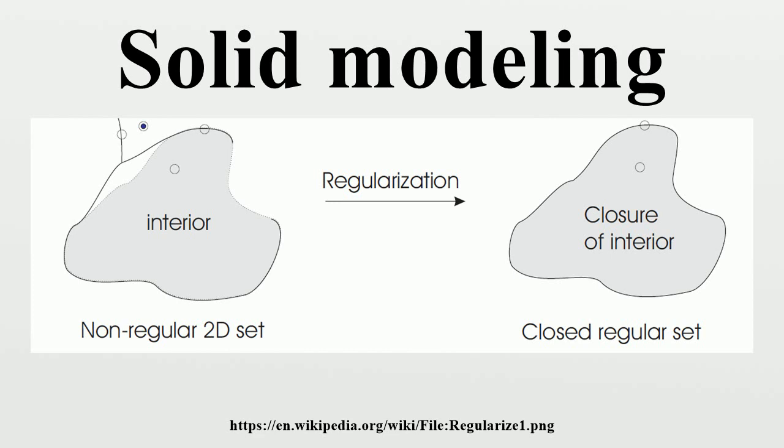Cell decomposition: This scheme follows from the combinatoric descriptions of solids. A solid can be represented by its decomposition into several cells. Spatial occupancy enumeration schemes are a particular case of cell decompositions where all the cells are cubical and lie in a regular grid. Cell decompositions provide convenient ways for computing certain topological properties of solids such as connectedness and genus. Cell decompositions in the form of triangulations are the representations used in 3D finite elements for the numerical solution of partial differential equations. Other cell decompositions such as Whitney regular stratification or Morse decompositions may be used for applications in robot motion planning.